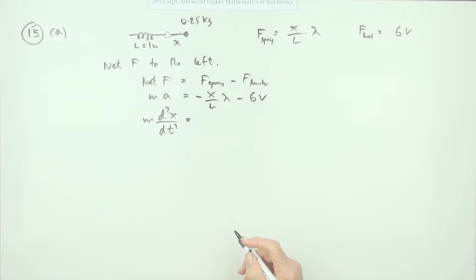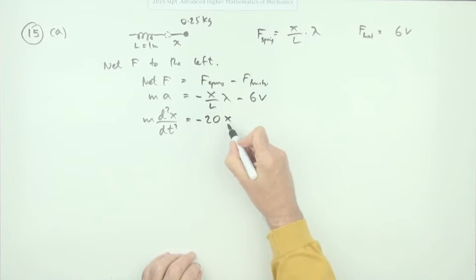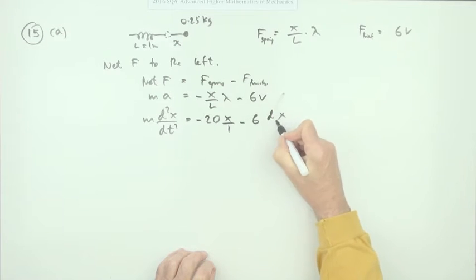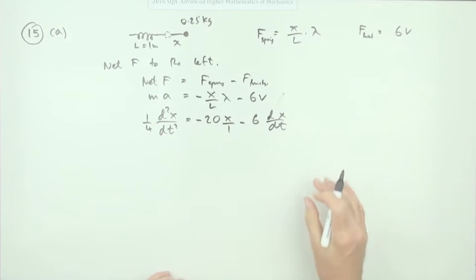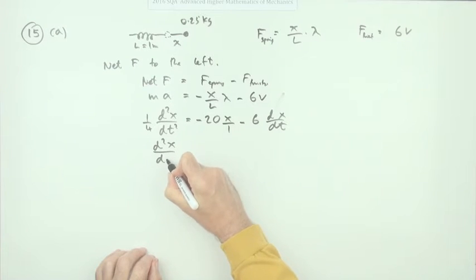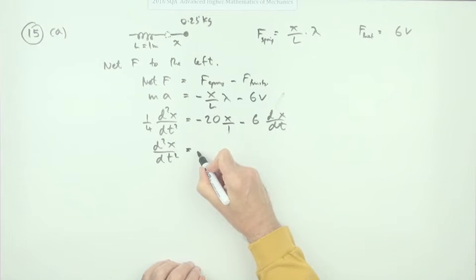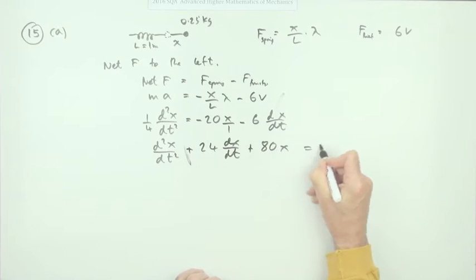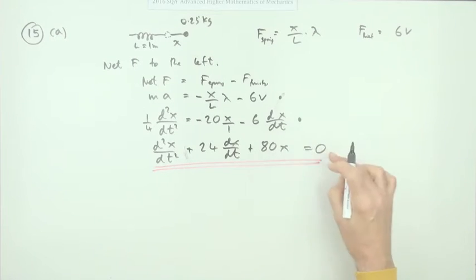Substituting: the modulus is 20, so we get negative 20x; the length is 1; the friction term is negative 6 times dx/dt. The mass is a quarter, so multiply through by 4 and rearrange. This gives the second derivative of x plus 24 dx/dt plus 80x equals zero — which is exactly the differential equation we were asked to show.